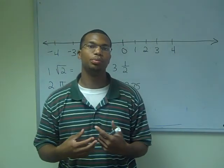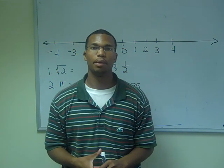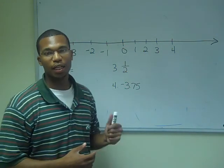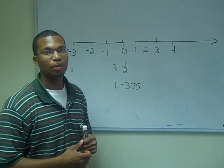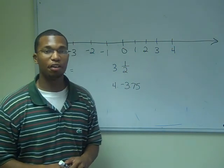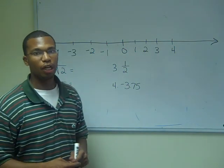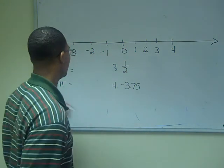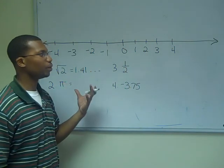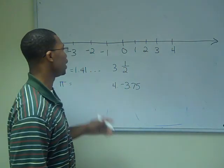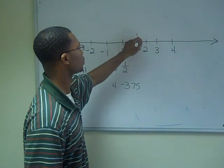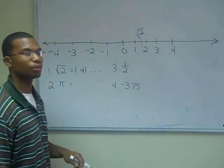Now that we know what numbers can go on the number line, let's start putting some numbers on the number line. What I've drawn is an example of the real number line. Notice the real number line simulates how the real numbers should appear in order. Looking at our first number, the square root of 2. Earlier we learned that the square root of 2 was equal to 1.41 and so on. So where we will put the square root of 2 on our real number line is right in between 1 and 2, kind of close to the halfway mark. Square root of 2, all done.